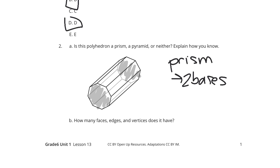Now, when we look at the number of faces, you've got the two bases, and then you have 8 of these rectangles coming around the side. So faces: the two bases plus those 8 rectangles would be 10 faces. Your number of edges is 24, and your vertices is 16.